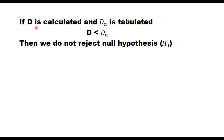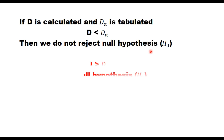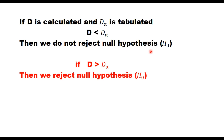If d is the difference between the observed and the theoretical distribution, and d-alpha is the tabulated value at a particular level of significance alpha, then there are two cases. Either d is less than d-alpha — if so, we accept the null hypothesis because we are in the region of acceptance, meaning the data follow the particular distribution. But if d is more than d-alpha, then we reject the null hypothesis, meaning the data do not follow that distribution.